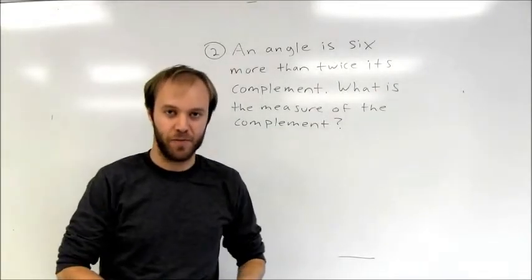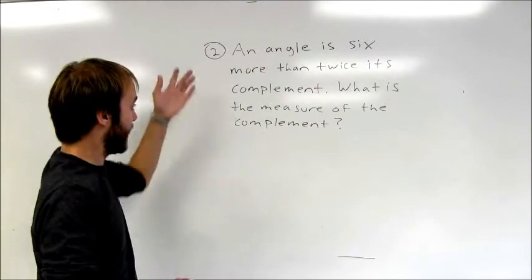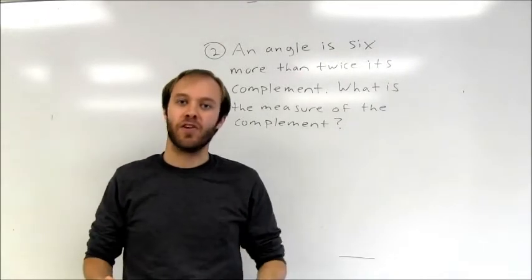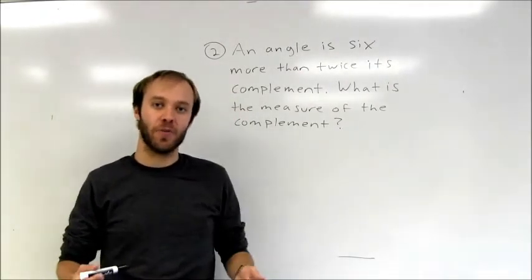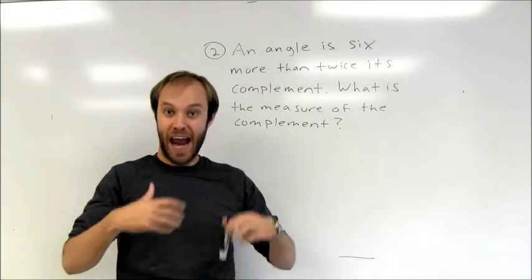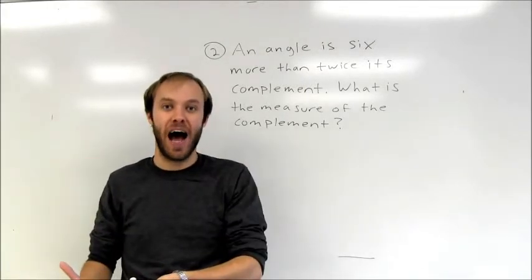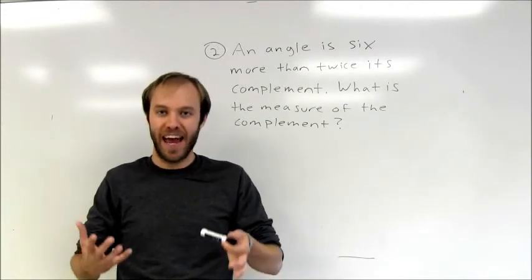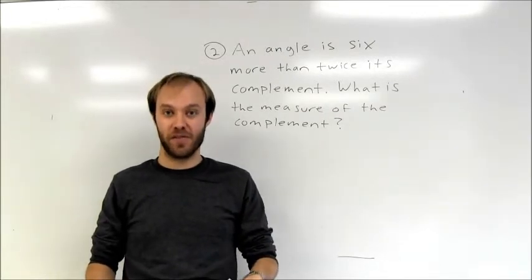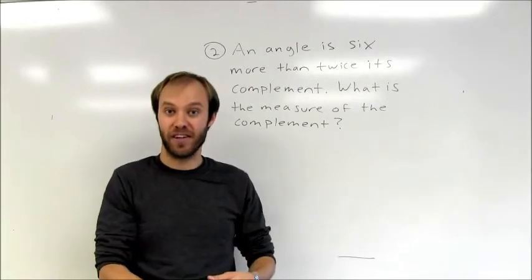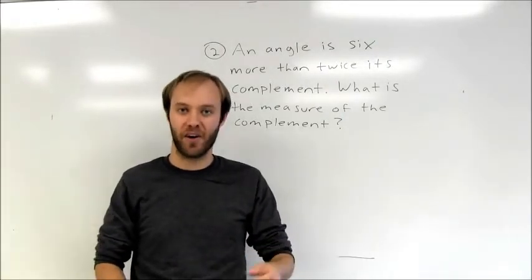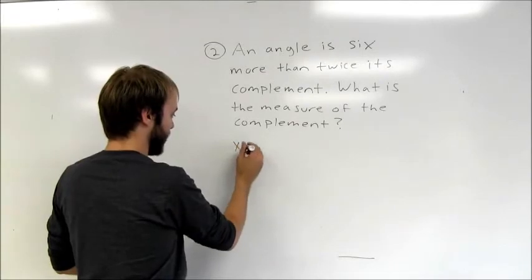In the second example, I'm asked to find the measure of an angle. It tells me that an angle is 6 more than twice its complement, and I want to find the measure of the complement. When writing these equations, you need to figure out what your variable represents. In this problem, we're told something about the angle in comparison to its complement, but nothing about the complement itself. So I'll let x represent the measure of the complement.